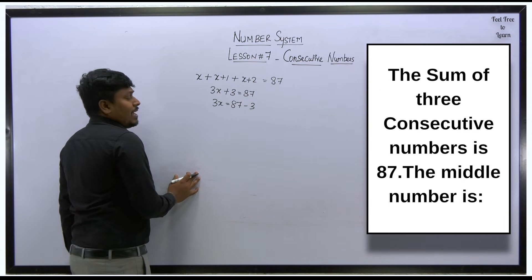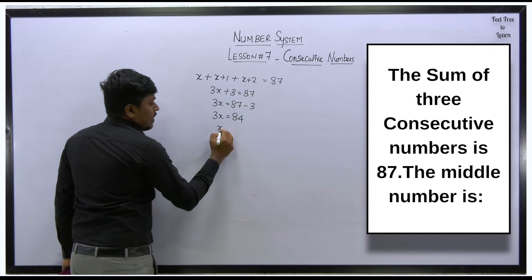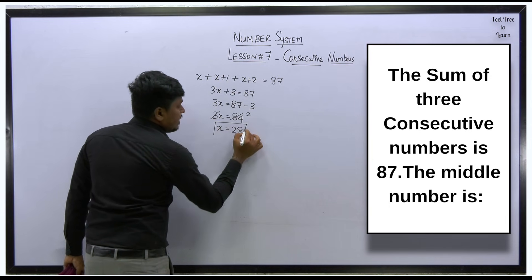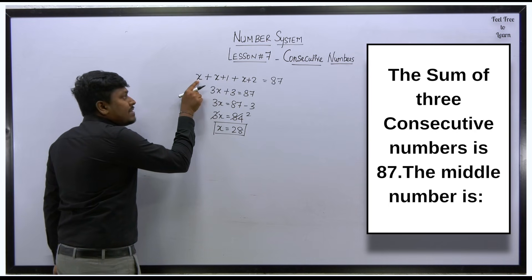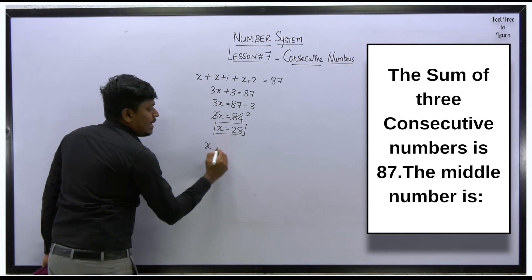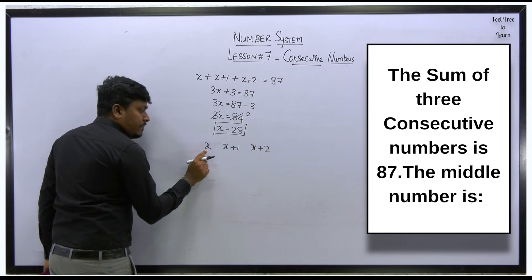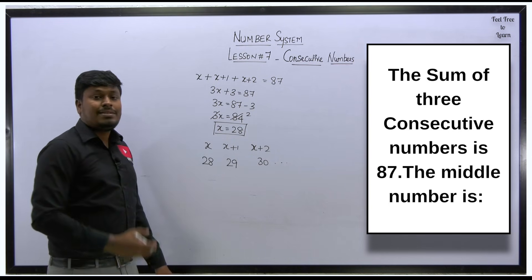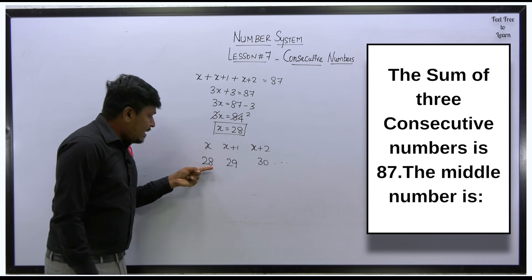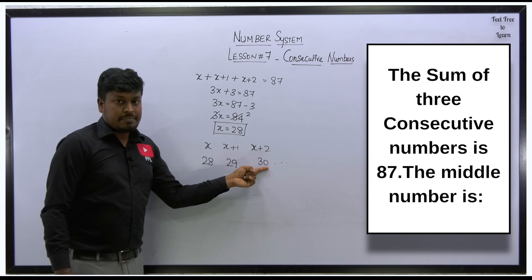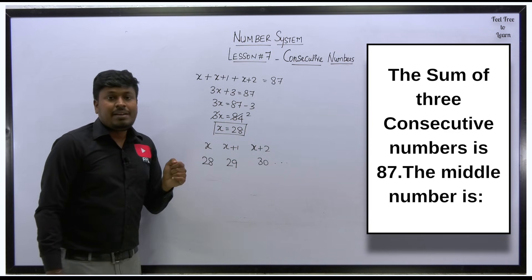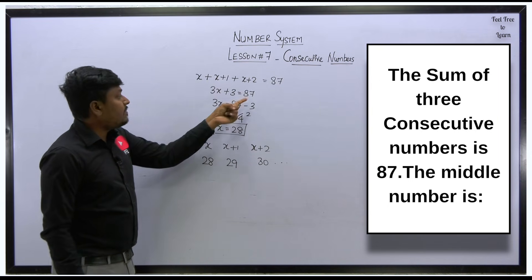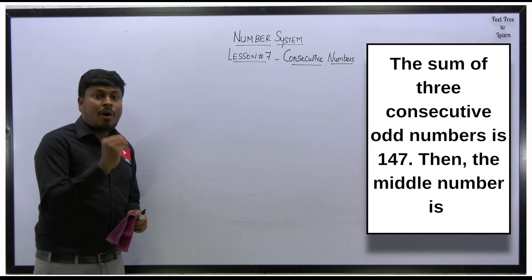Adding: 3x + 3 = 87, so 3x = 84, which gives x = 28. Substituting back: the first number is 28, the second is 29, and the third is 30. The middle number is 29. You can verify: 28 + 29 + 30 = 87.